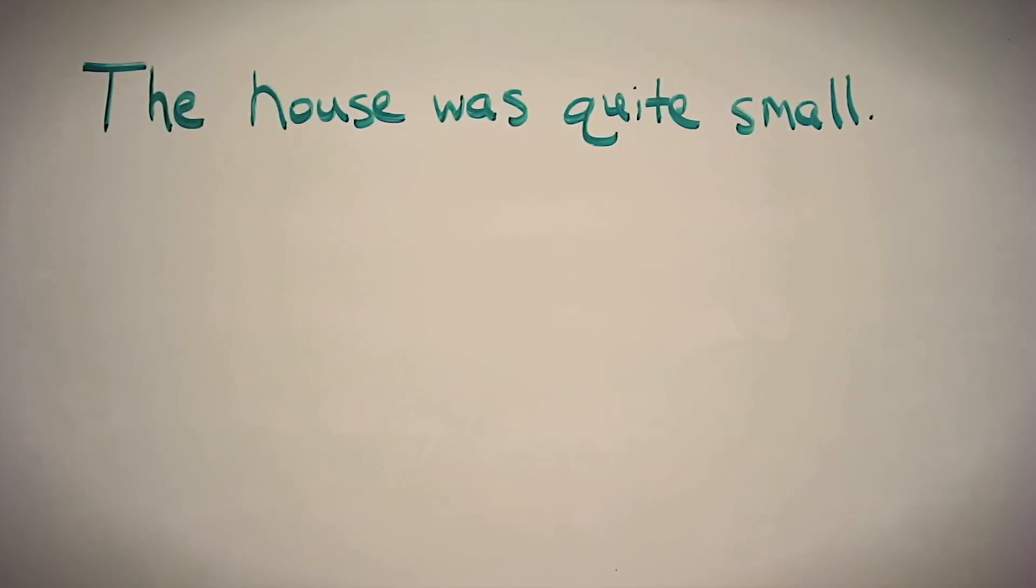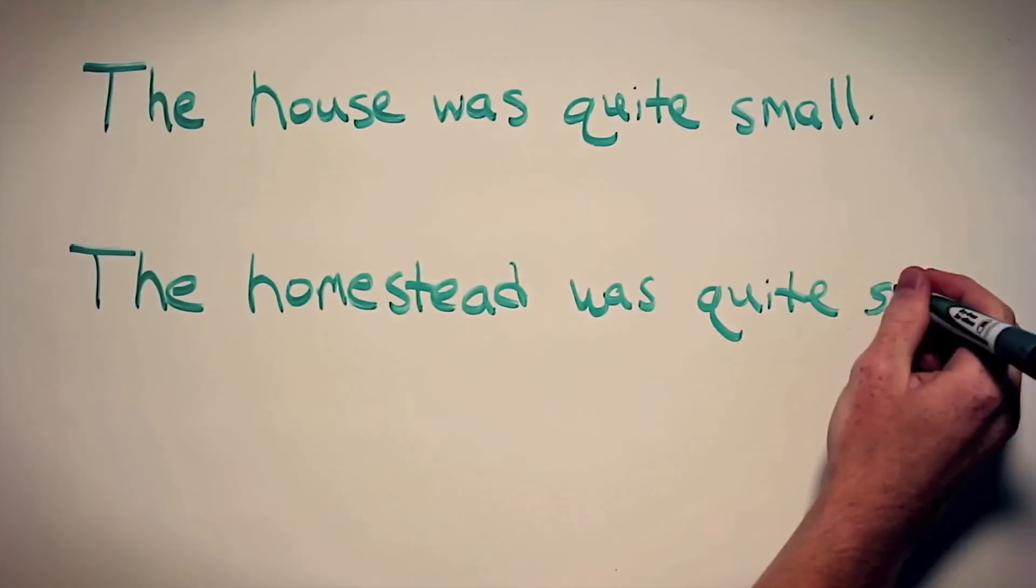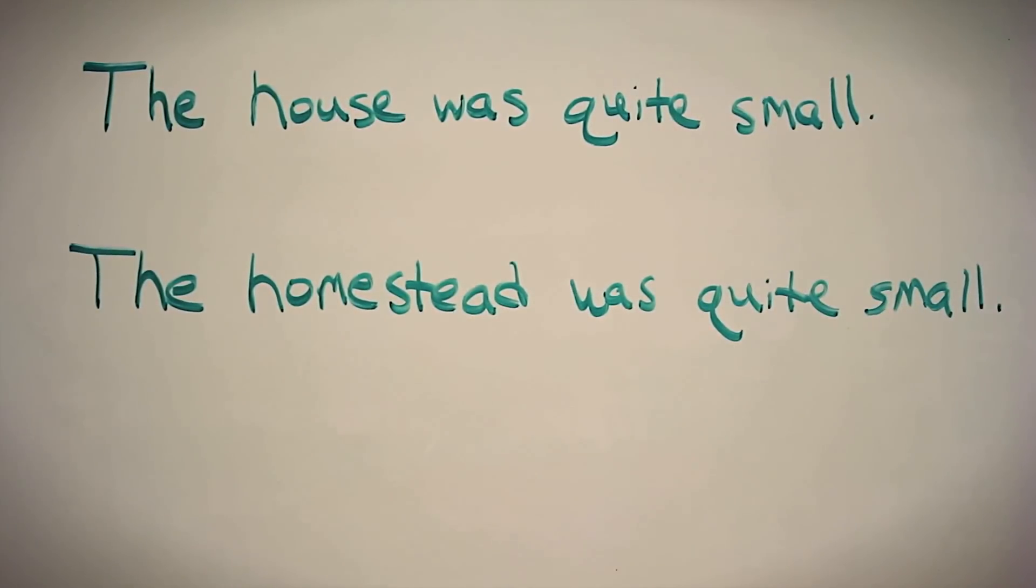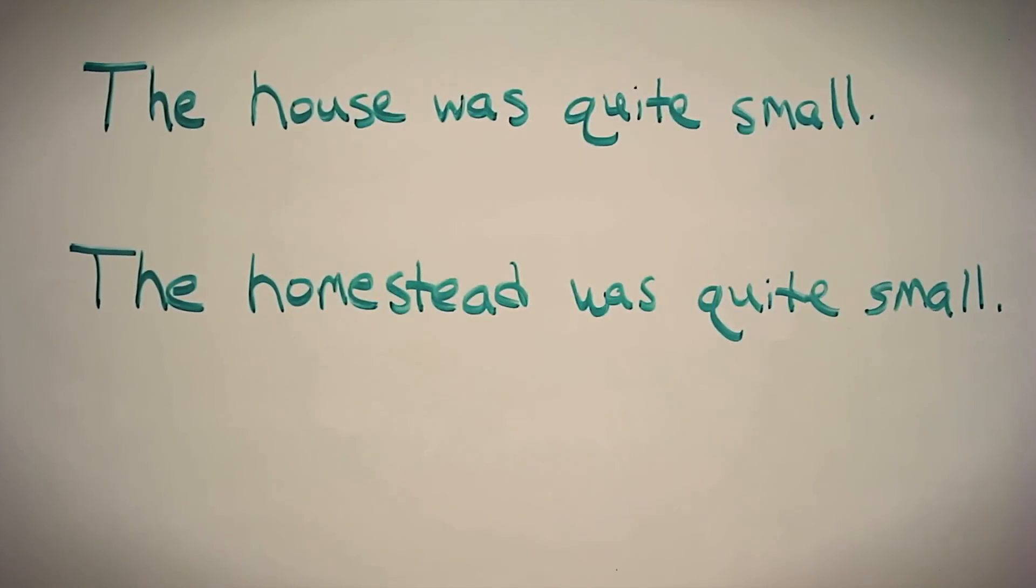And again we're going to look at the subject of the sentence, which is house. Here's another sentence: The homestead was quite small. In this example we simply replaced house with homestead. The connotation of these sentences has remained the same, but a slightly different meaning can be seen between these two sentences, especially when we look at the different word definitions.